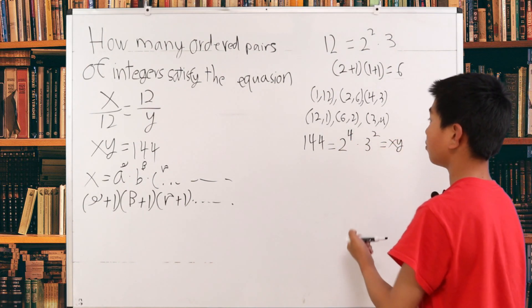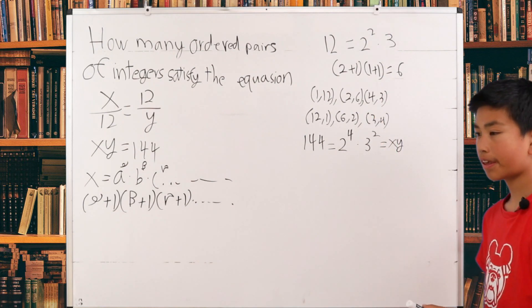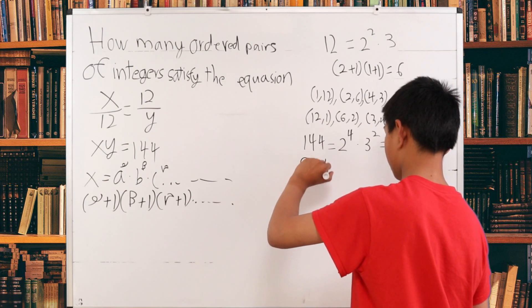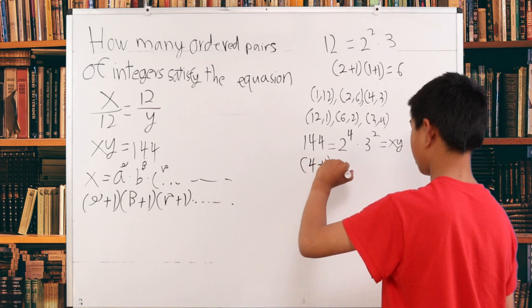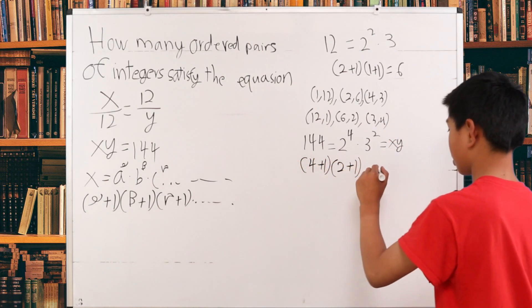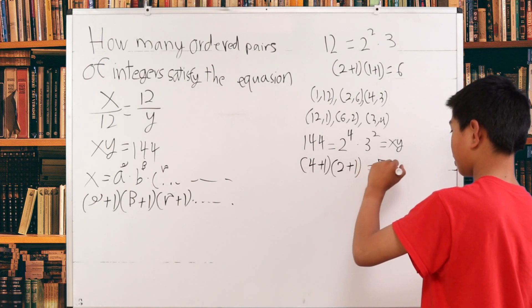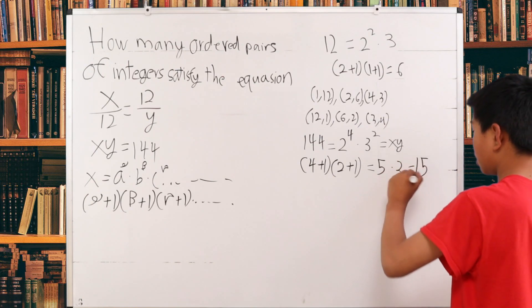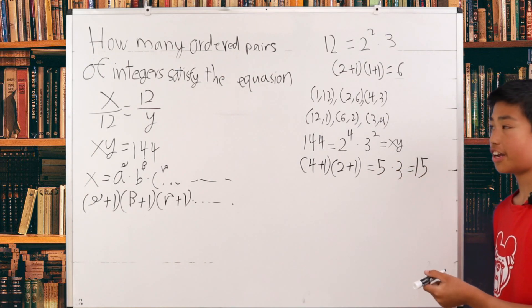So now you can use the trick that we just did up here. So this is going to be 4 plus 1 times 2 plus 1. This is going to be 5 times 3, which is 15. But that is not yet our answer.